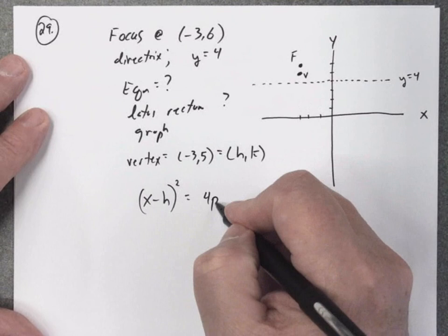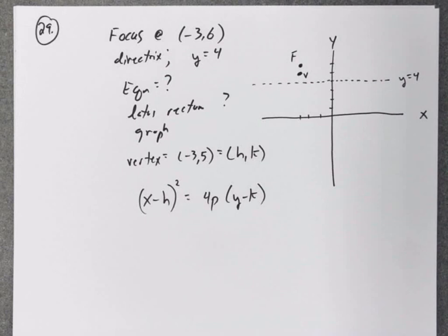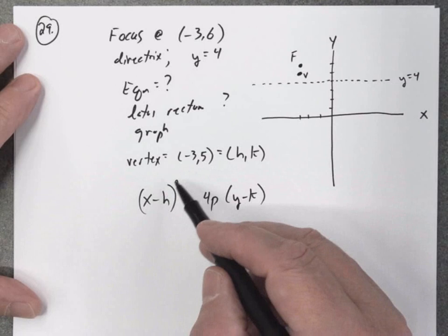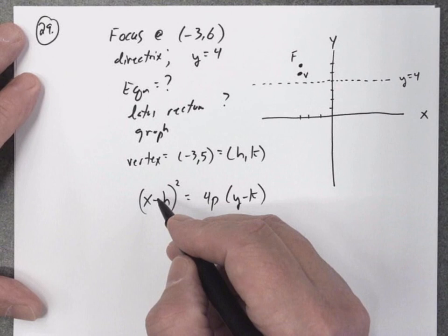The x ends up being squared. So really, to find the equation of a parabola, all we need to know is the vertex and the value of p. Well, we know the vertex, (-3, 5), we can plug in -3 for h and 5 for k.